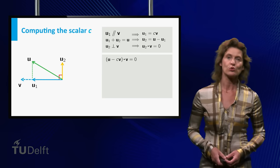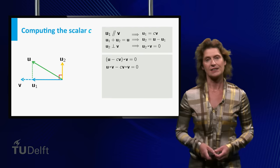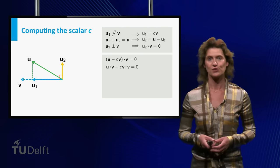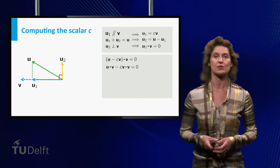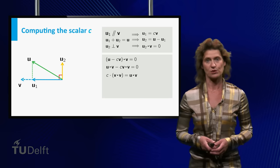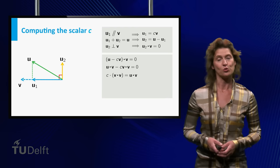By using the mathematical rules of the dot product, you can rewrite the equation as the dot product of u and v minus the dot product of cv and v equals zero. A slight modification yields c times the dot product of v and itself equals the dot product of u and v.